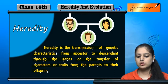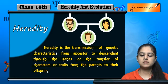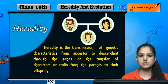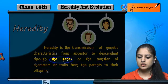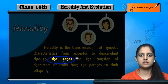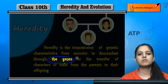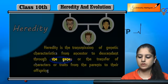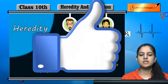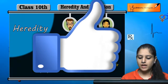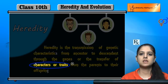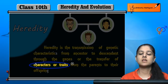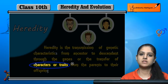So heredity kya hai? Transmission of genetic characteristics. So what is being transmitted? Genetic characteristics — aur woh genetic characteristics kis ke through transfer hote hain? Genes ke through transfer hote hain. Yeh characteristics jo hain, yeh genes mein information hote hain, genetic information — woh ek organism se doosare organism mein transfer hote hain. Ab in genes ke transfer se kya hota hai ultimately? Characters ya traits ek parents se ek child ke andar transfer hote hain.